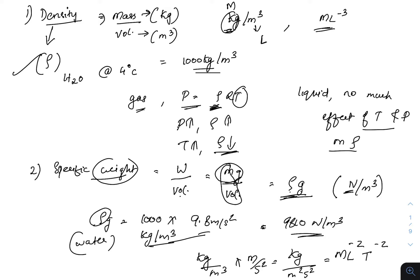Now let us check the unit of specific weight: kilogram per meter cube multiplied by meter per second square. Simplifying, you get kilogram per meter squared per second squared, or in dimensional form M·L⁻²·T⁻².